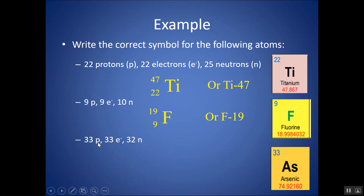33 protons, 33 electrons, 32 neutrons. Protons and electrons are equal in a neutral atom. 33 protons identifies the element as arsenic. The mass number is found by adding protons and neutrons: 33 plus 32 gives 65. Notice that 65 is quite different from the atomic mass on the periodic table — that's okay, it's just not an abundant isotope found in nature. You do not look up the mass number; you add protons and neutrons to get it.